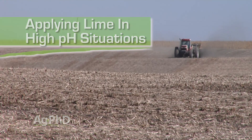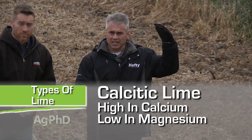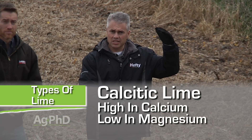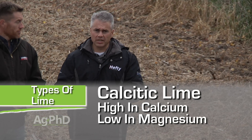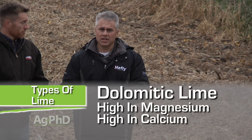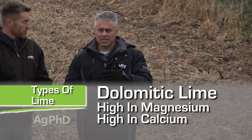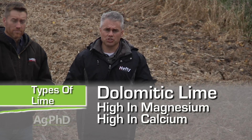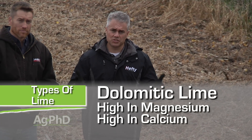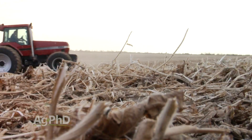There are two main types of lime: calcitic lime, which is high in calcium and low in magnesium, or dolomitic lime, which is high in magnesium but still high in calcium. It just depends on the situation that the farmer is in.